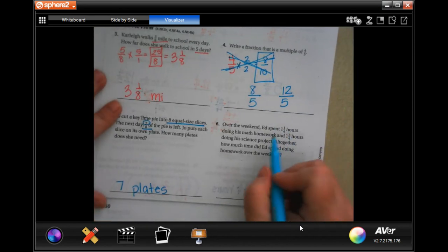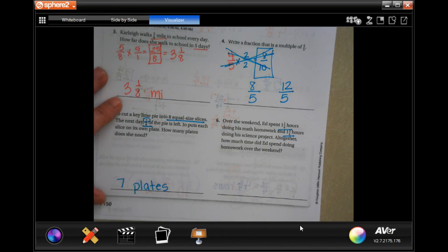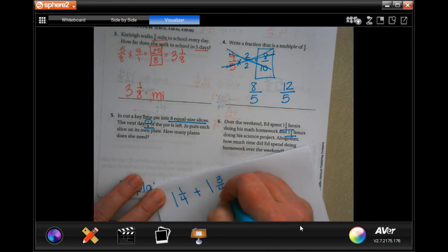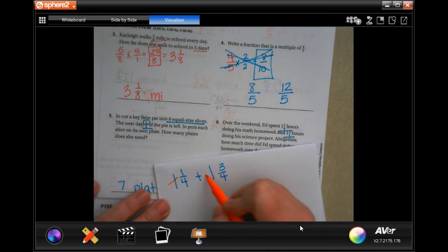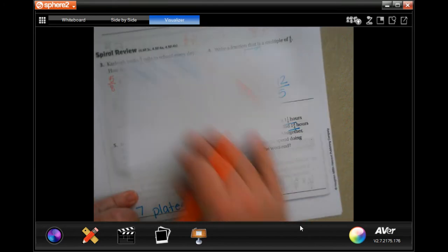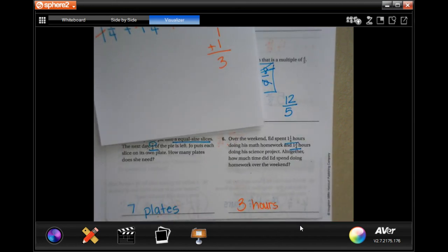Over the weekend, Ed spent 1 and 1 quarter hours doing his math homework and 1 and 3 quarters hours doing his science projects. Altogether, how much time did Ed spend doing his homework over the weekend? So, 1 and 1 quarter plus 1 and 3 quarters. So, I like to take my whole numbers and put them over on the side. And then, I only have to deal with 1 quarter plus 3 quarters and 1 plus 3 is 4 and my denominator, well, 4 over 4 is equal to another 1. So, I'm going to say 3 hours. That stinks to have that much homework on the weekend.